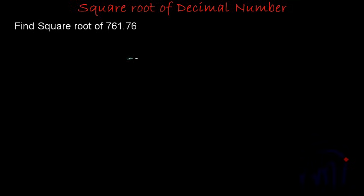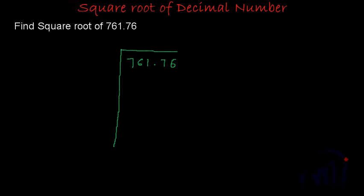To find the square root of 761.76, first we will draw these lines and then we do the pairing. While we do the pairing, we start from the decimal point and go in both directions. When we go in the left direction, 6 and 1 will make one pair and 7 will be alone. And if we go towards the right, 7 and 6 will make one pair.